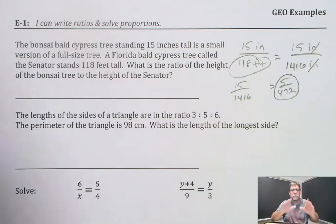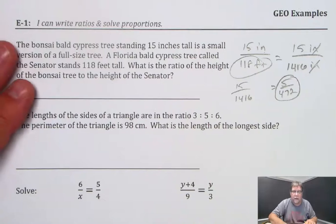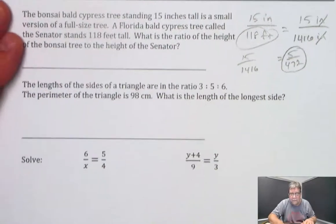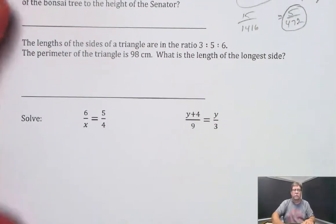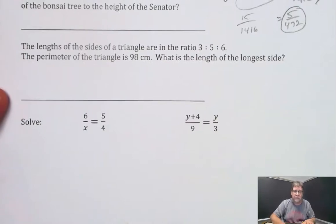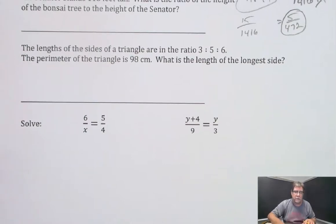So that's the reduced ratio of the smaller bonsai tree to the larger real tree. In the second example, we have the lengths of the sides of a triangle are in the ratio 3 to 5 to 6. The perimeter of the triangle is 98 centimeters. What's the length of the longest side?